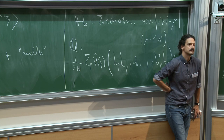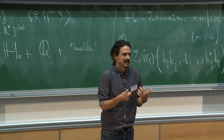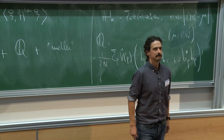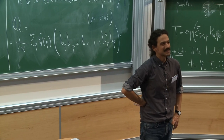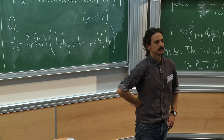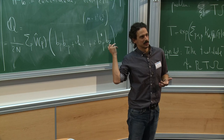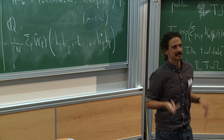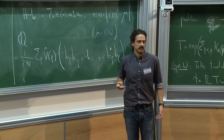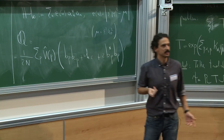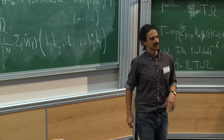The positivity of the Fourier transform of V is related to repulsion of the particles. It ensures that adding the potential increases the energy. The Coulomb potential satisfies this condition, which is physically the most relevant case. Beyond technical necessity, it is a natural condition for repulsive interactions.